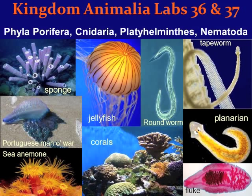These are labs 36 and 37. We can find lab 36 on page 385 in your lab manual. We're going to be discussing four phyla: Porifera, which are the sponges; Cnidarians, which are the sea jellies; Platyhelminthes, which are the flatworms; and Nematodes, which are the roundworms.